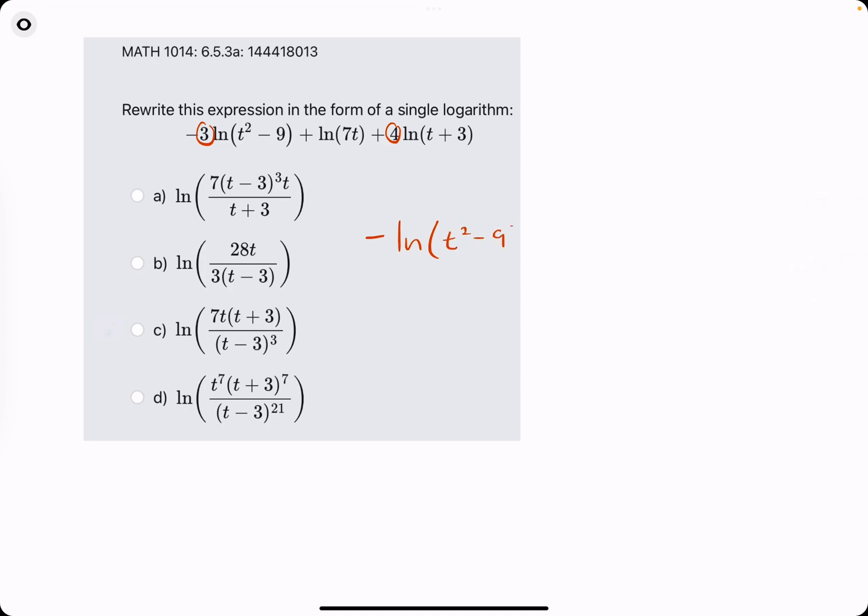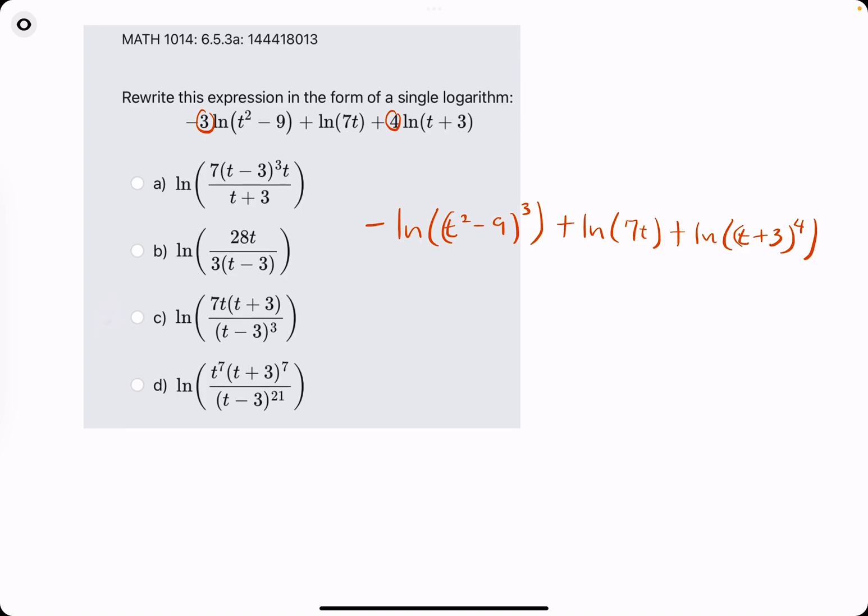So, -ln(t² - 9)³ + ln(7t) + ln(t + 3)^4. So we brought up the coefficients as exponents.